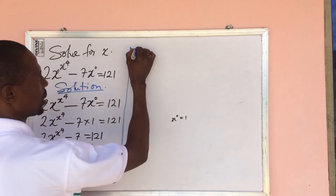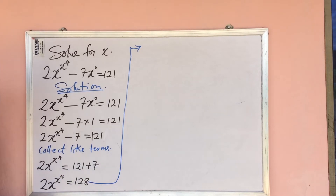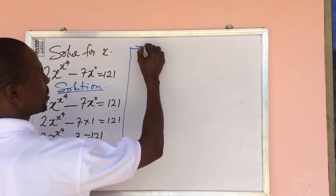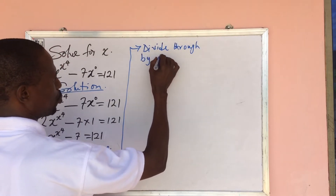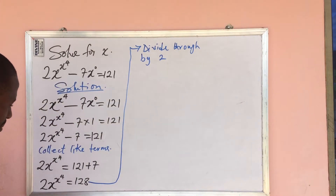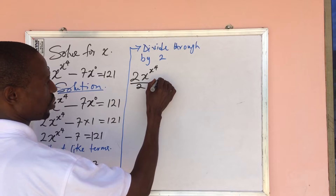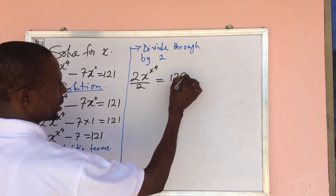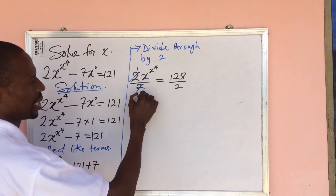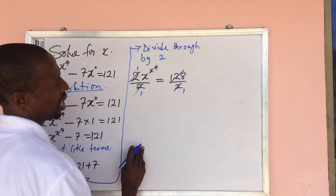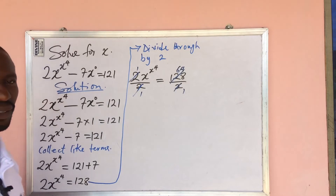We are having a constant term here and a constant term here, so we eliminate this 2 by dividing through by 2. So divide through by 2: 2x to the power of x to the power of 4 divided by 2 equals 128 over 2. The 2s cancel, and 128 divided by 2 gives us 64.